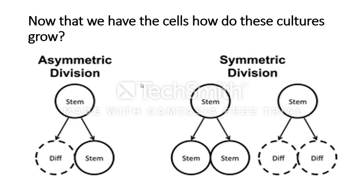Also, the issue with stem cells creating two daughter stem cells is that those stem cells are not differentiated, and therefore there will be no differentiation in the organism. The best possibility is asymmetric division — a stem cell producing one differentiated cell and one stem cell — which allows for differentiation while keeping the stem cell reserve.